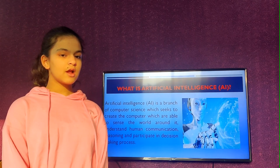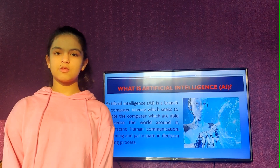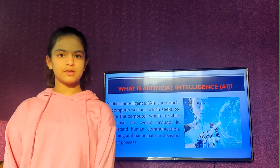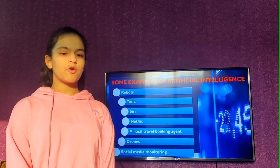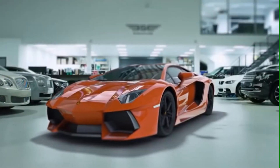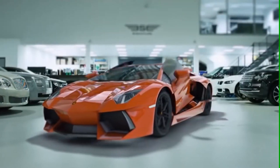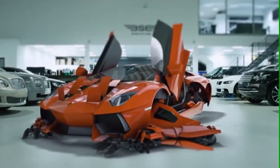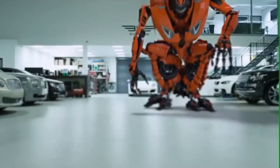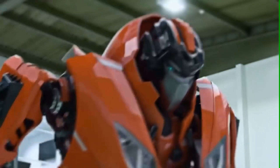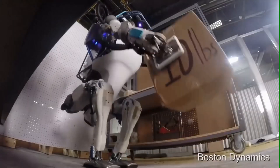Here are some examples of Artificial Intelligence, like robots. A robot is a machine specially programmable by computer, which is capable of carrying out complex series of actions automatically.